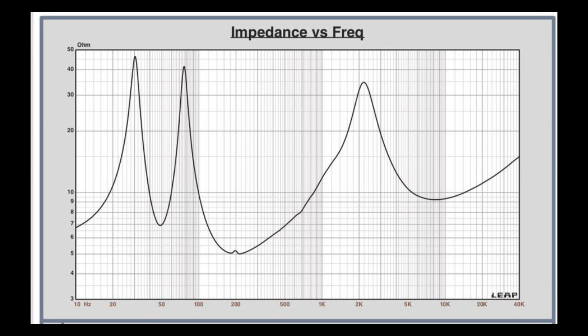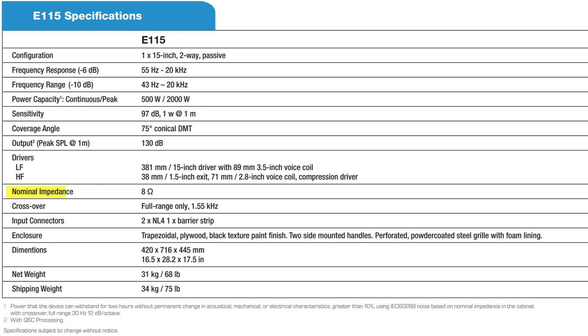The impedance of a speaker is frequency dependent, meaning that the impedance at 200 hertz isn't necessarily the same as the impedance at 2 kilohertz. To make things simple, speaker manufacturers list a nominal impedance in the specifications.